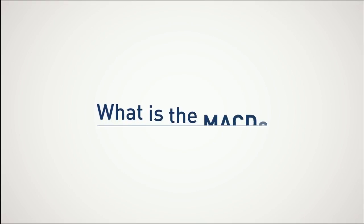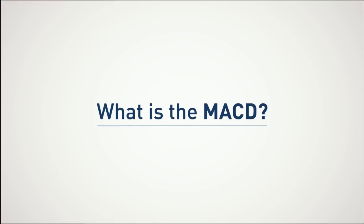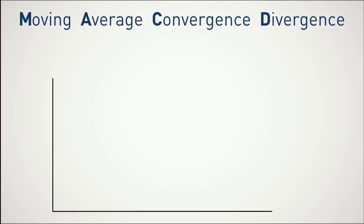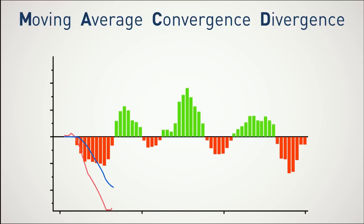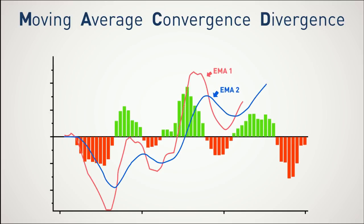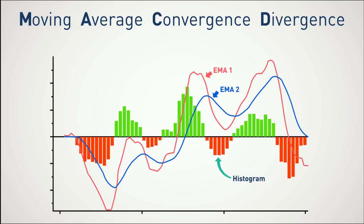What is the MACD? The Moving Average Convergence Divergence calculation is a lagging indicator used to follow trends. It consists of two exponential moving averages and a histogram. The default values for the indicator are 12, 26, 9.